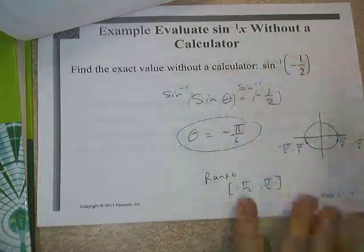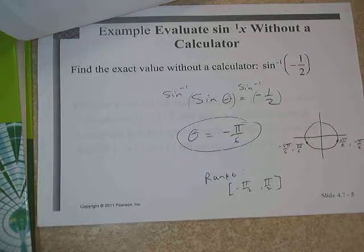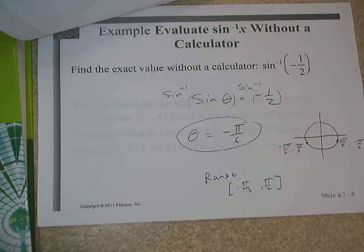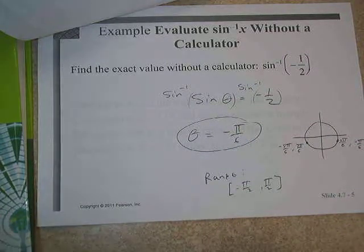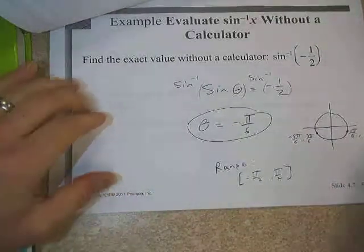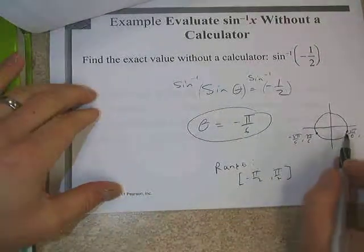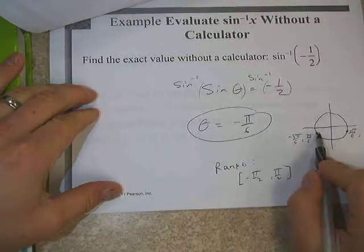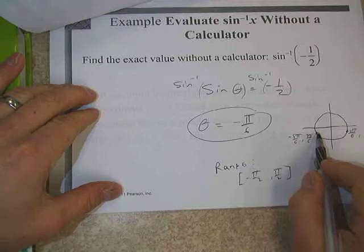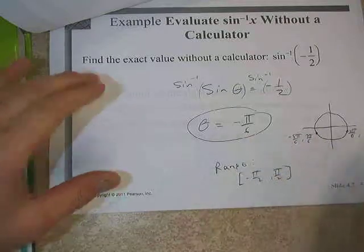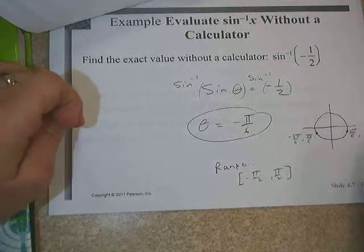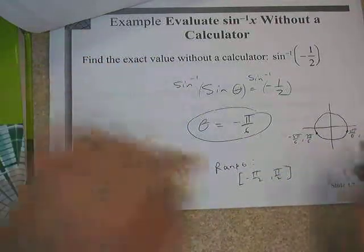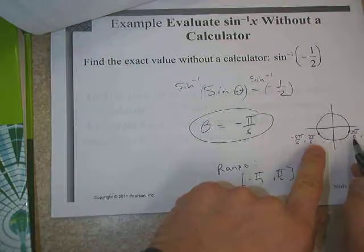Out of those two negative choices — negative pi over 6 and negative 5 pi over 6 — we need to decide which one lives inside the range of negative pi over 2 to pi over 2. Negative pi over 6 does, so the answer in this case is negative pi over 6.